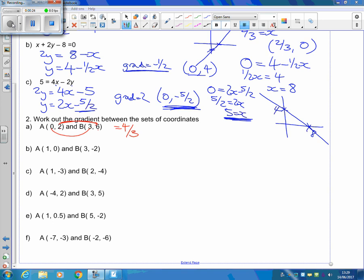How do I get from 0 to minus 2? That's down 2. How do I get from 1 to 3? That's 2. Minus 2 divided by 2 makes minus 1.